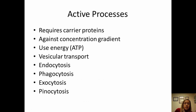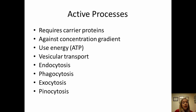Active processes require ATP. They go against the concentration gradient, typically moving from lower to higher concentration. This includes vesicular transport — transport of materials in little bubbles called vesicles — as well as phagocytosis and pinocytosis, meaning cell eating and cell drinking, which are examples of endocytosis.